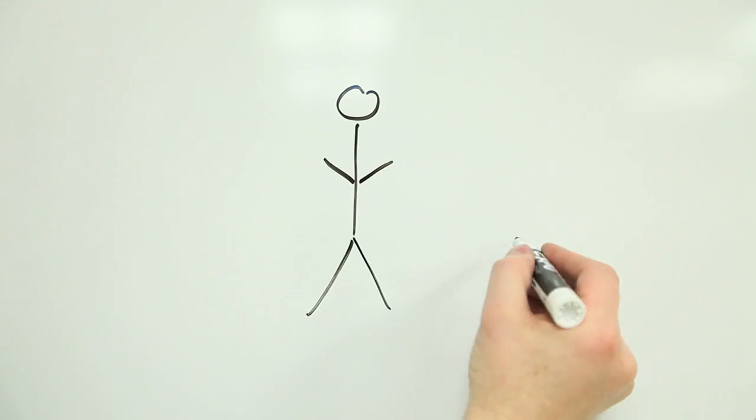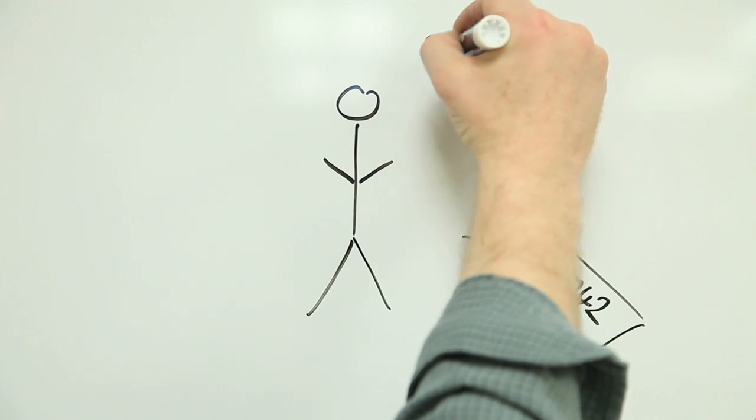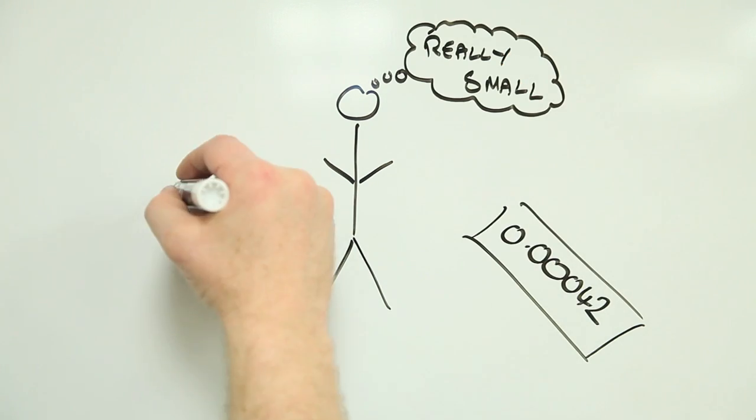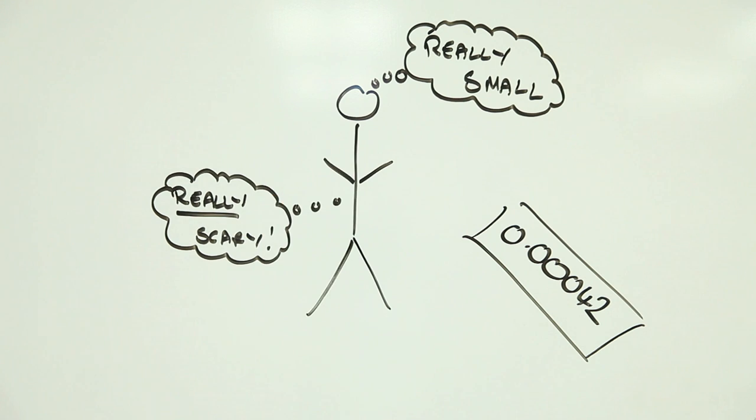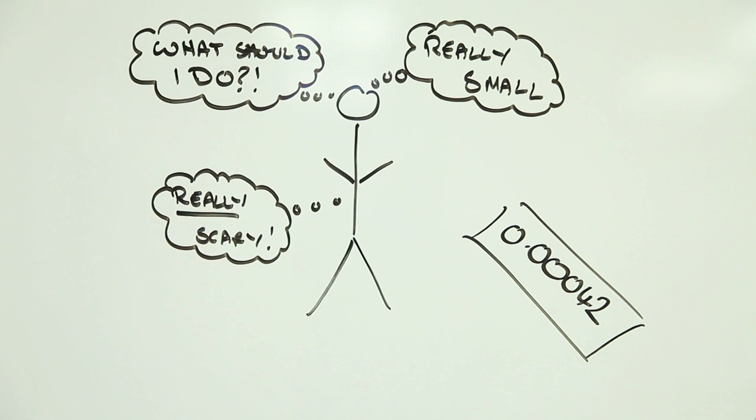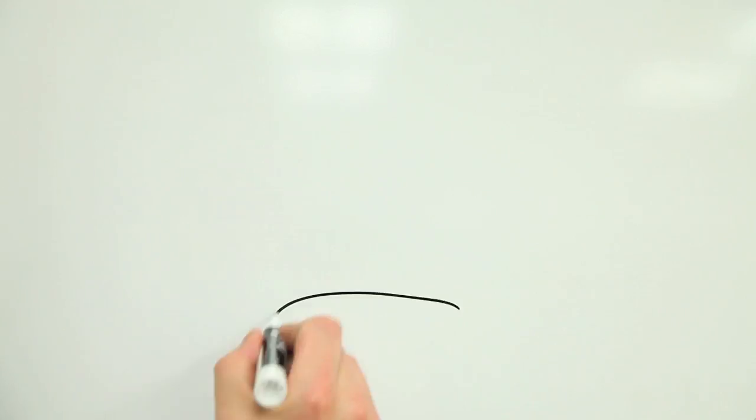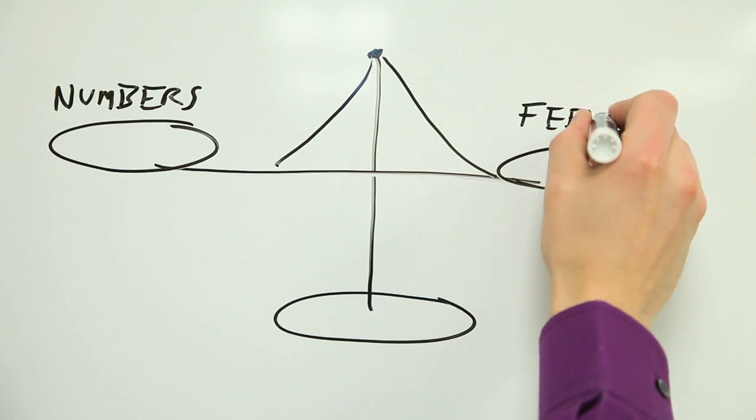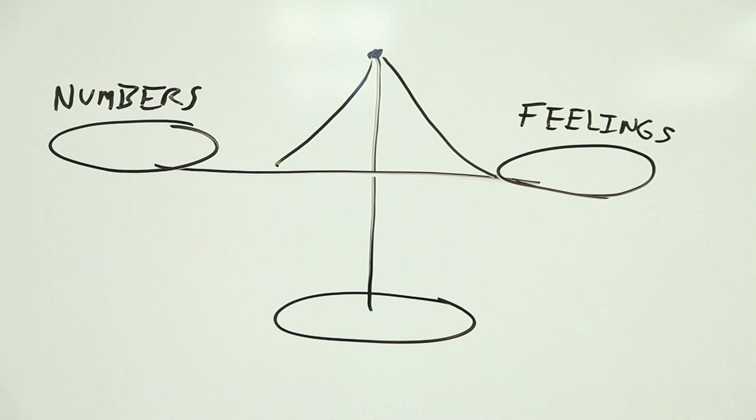Sometimes your brain may say, this risk number is really small, at the exact same time that you feel really scared. So, which should we listen to, our brain or our feelings? It depends. Sometimes we should listen to our brains. And sometimes we should listen to our feelings. But both are important.